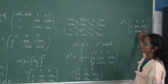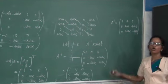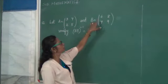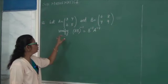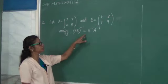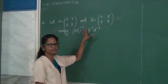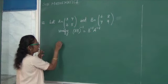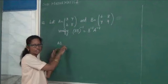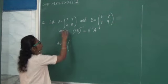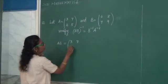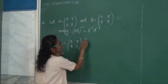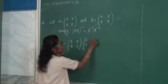Sometimes you arrive at A inverse as the given matrix itself, though not always. Here, let A equal to 3, 7 / 2, 5 and B equal to 6, 8 / 7, 9. We are going to verify that AB whole inverse equals B inverse A inverse. First we find AB: A into B equals 3, 7 / 2, 5 into 6, 8 / 7, 9.